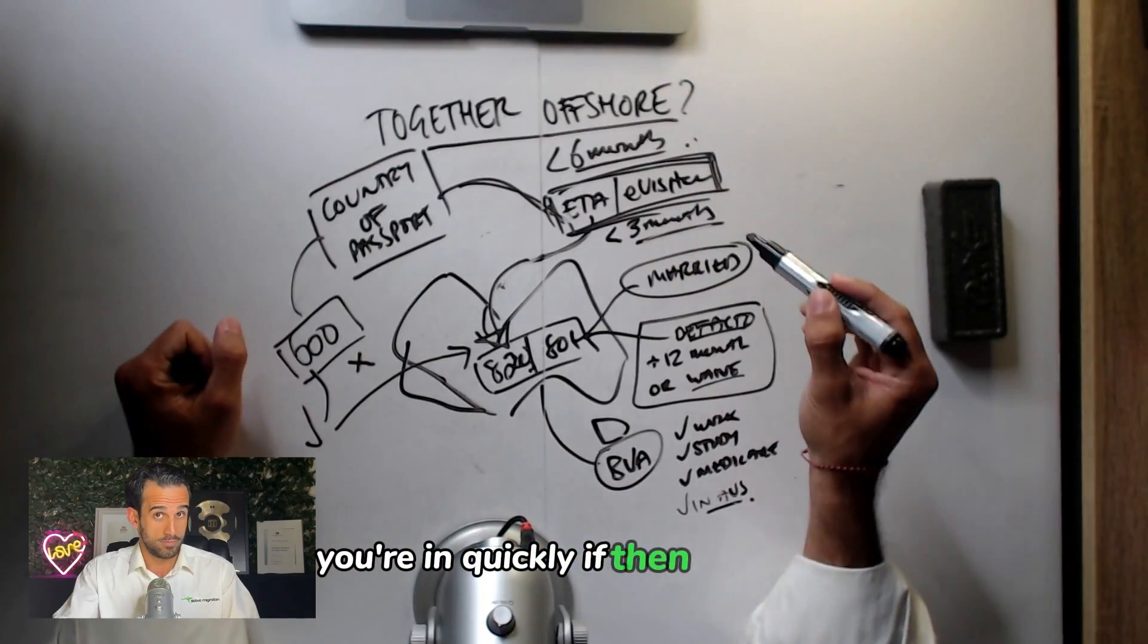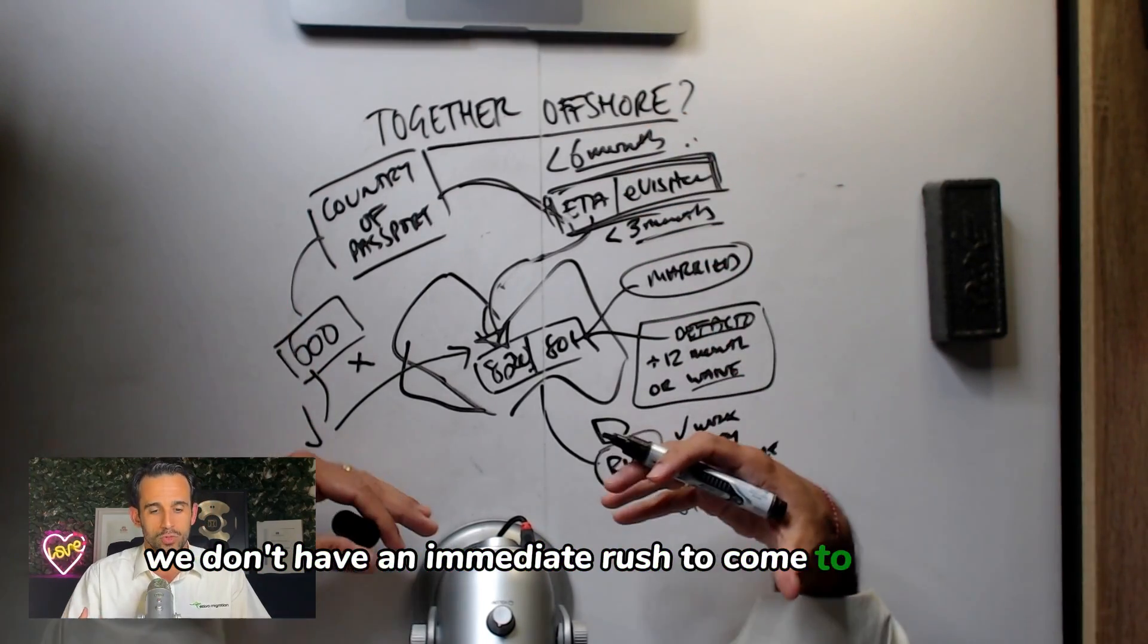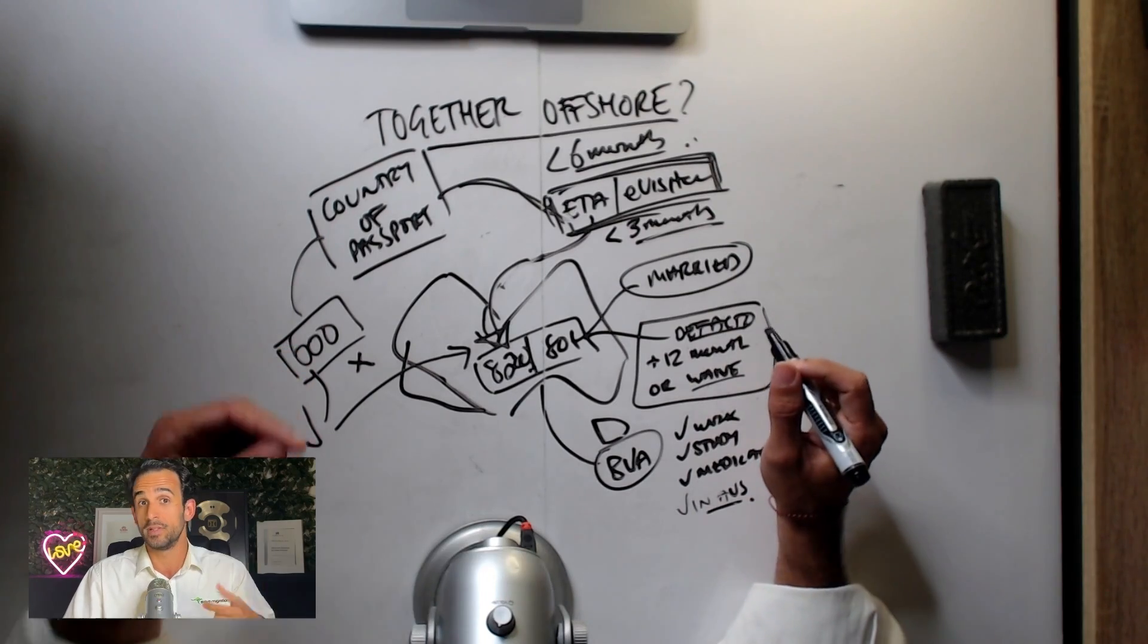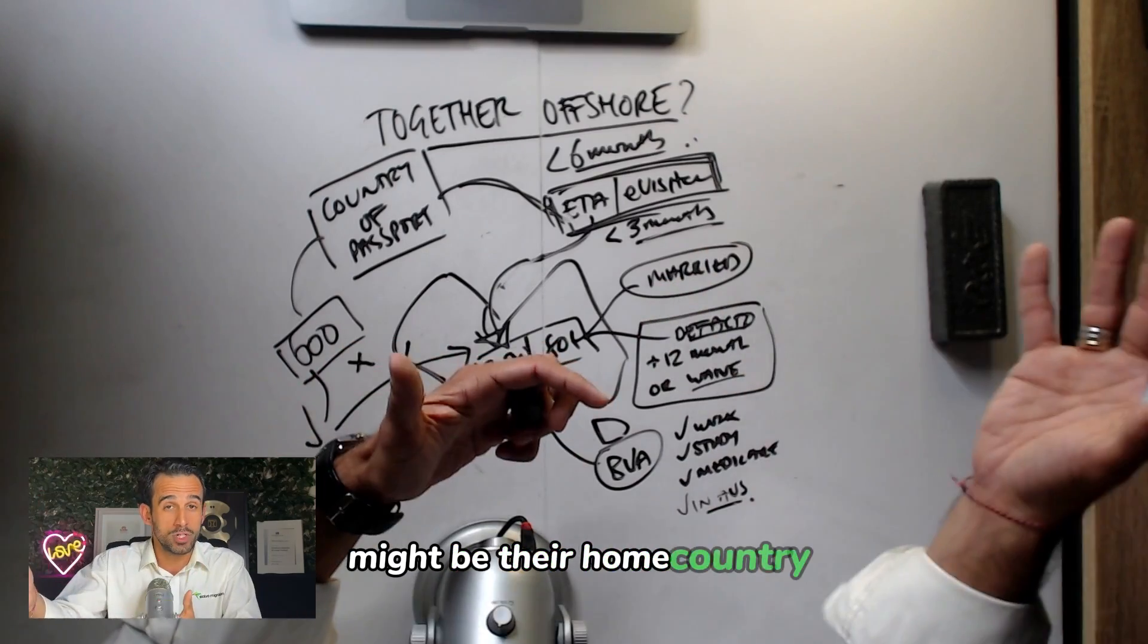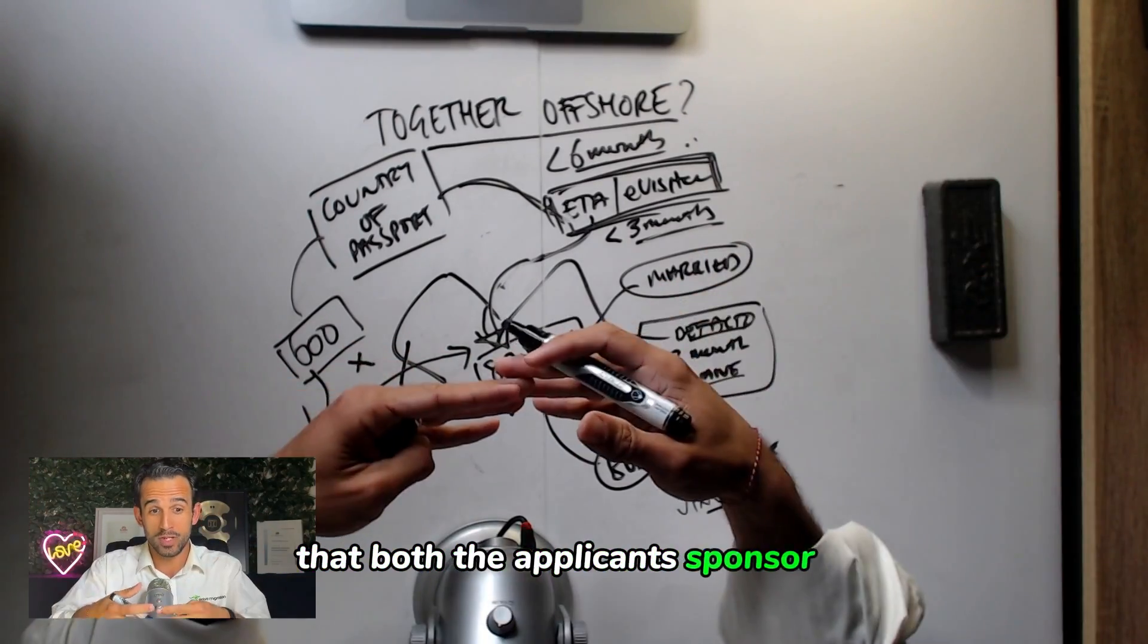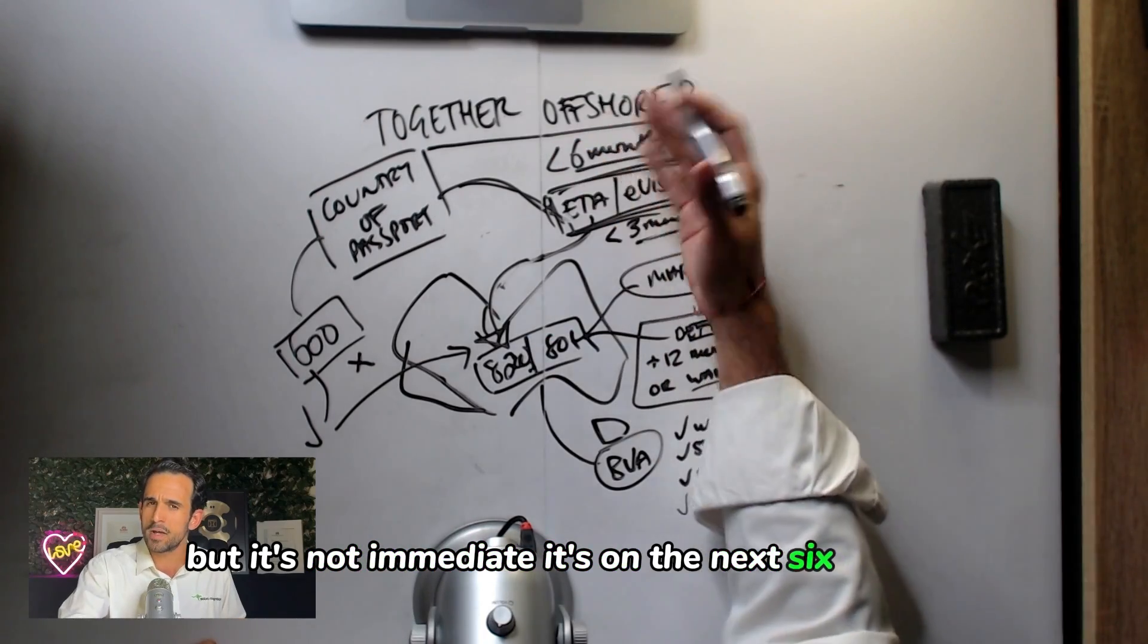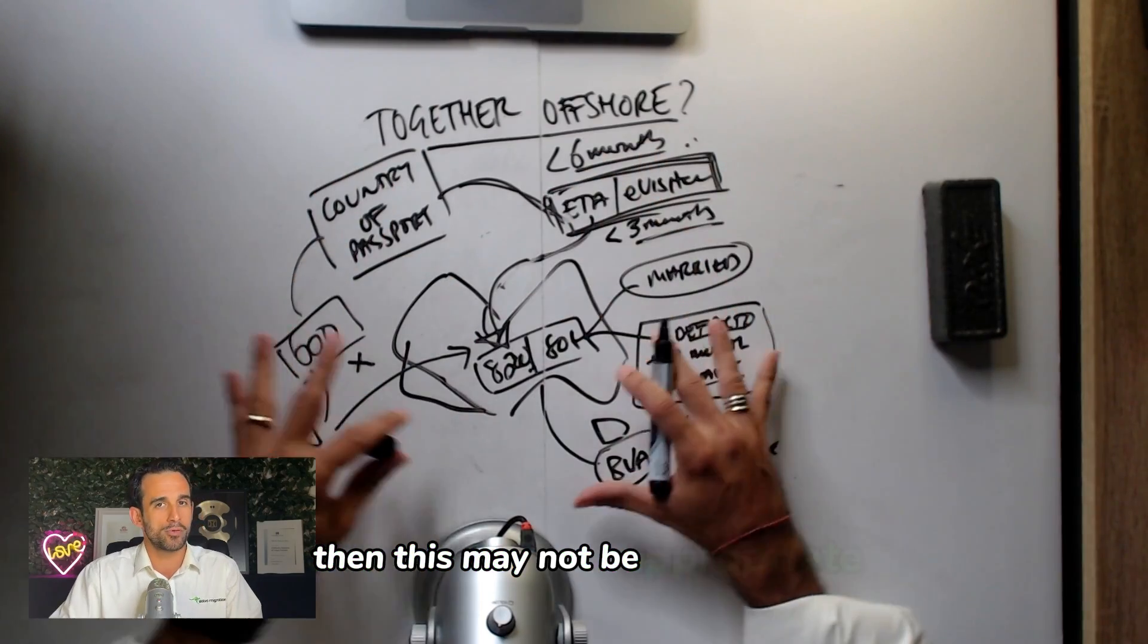If then, however, the answer to the question is we don't have an immediate rush to come to Australia, because the context of this video is talking to couples that are together overseas, and that typically means the Australian sponsor is living and working where the applicant lives, might be their home country, might be a mutual kind of third country that both the applicant and sponsor are in. If you have a projected need to come into Australia, but it's not immediate, and it's not in the next six months, but you know it's within the next 12 to 24 months, then this may not be appropriate.